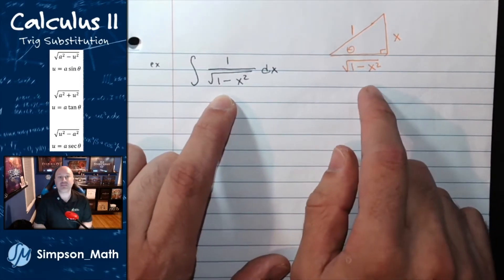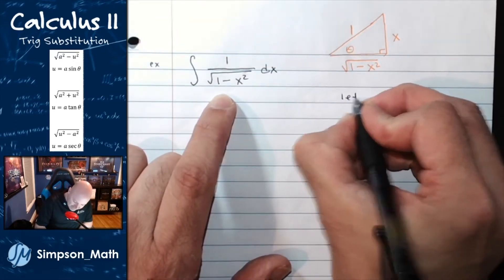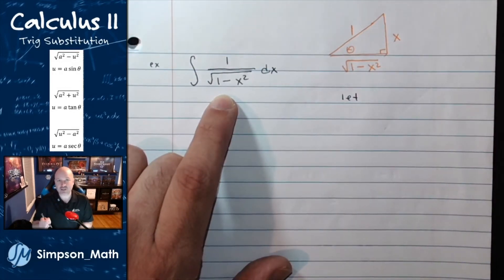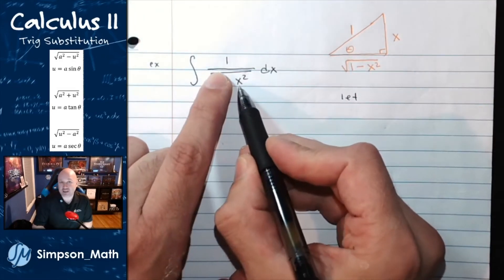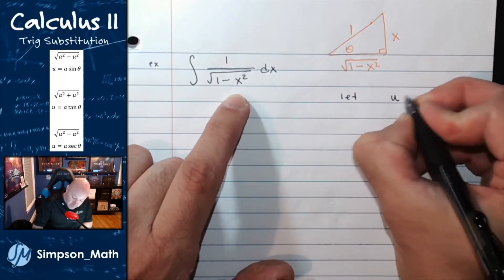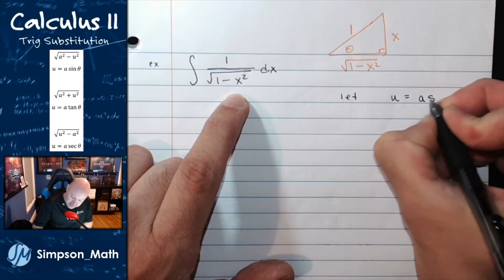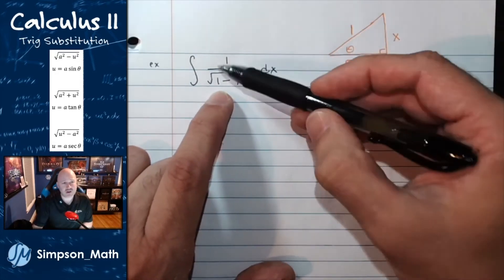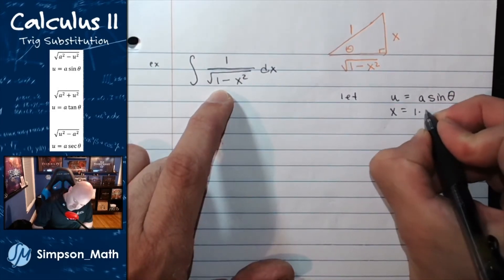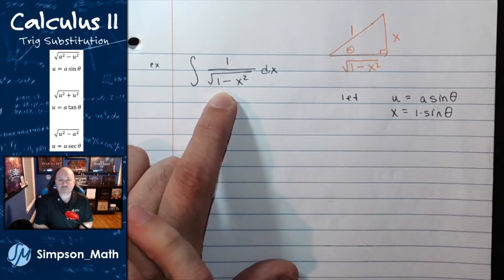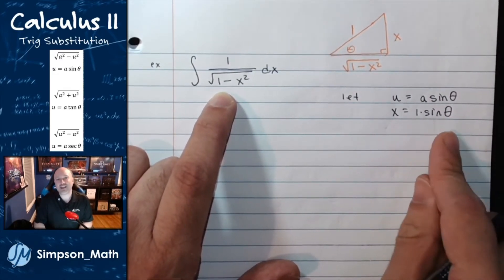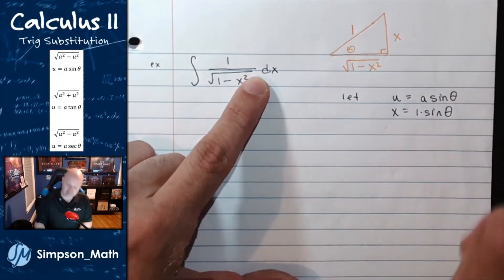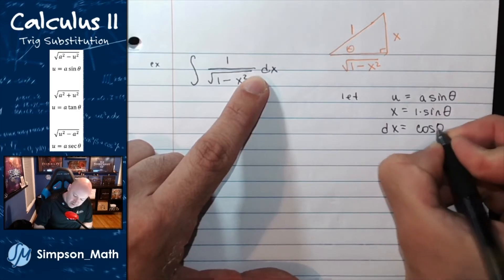This is the sine situation. So I'm going to let u equal a sine theta. The function being squared is simply x, and a is 1. So we let x equal 1 sine theta. This is substitution — I need a dx, so I find the derivative of x: dx equals cosine theta d theta. Now I'm ready for trig substitution, rewriting all x's and dx's in terms of theta.